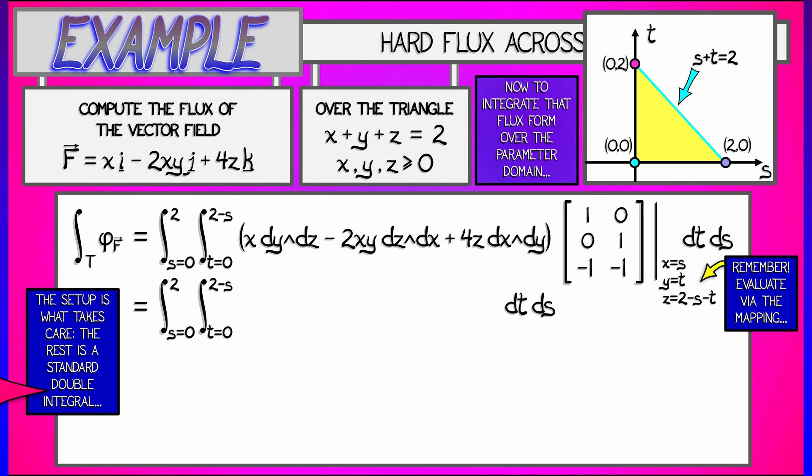So let's start substituting in these three terms. The first x dy wedge dz evaluates to s times what happens when we feed this matrix into dy wedge dz. That determinant of that 2 by 2 sub block at the bottom is just 1. So our first term simplifies to just s.